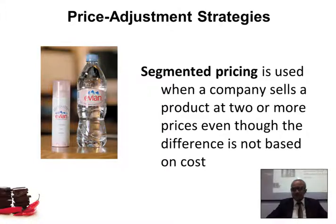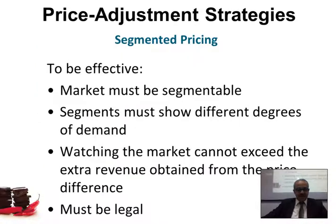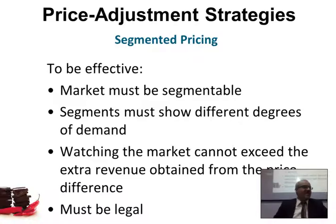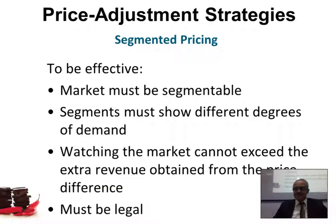For segmented pricing to be effective: the market must be segmentable, segments must show different degrees of demand, the cost of watching the market cannot exceed the extra revenue from price differences, and it has to be legal. You can't do segmented pricing that becomes illegal — for example, charging someone more based on their eye color would be discriminatory.